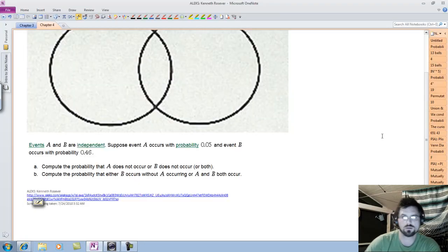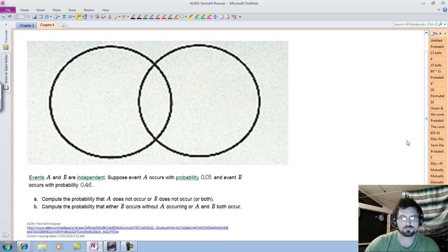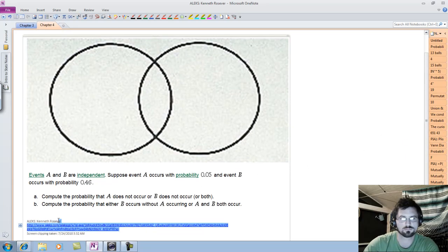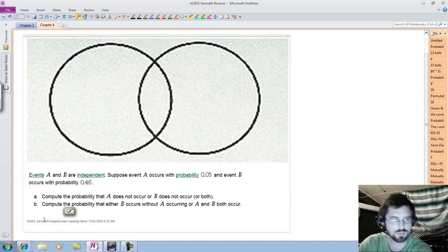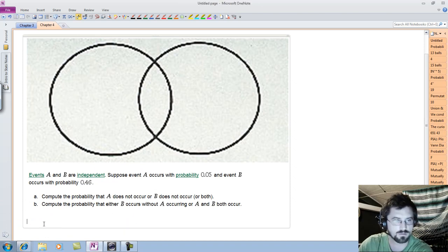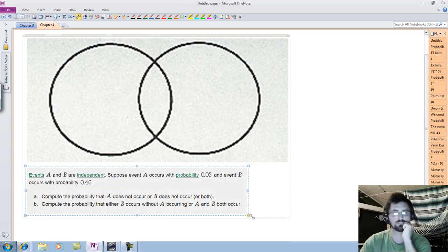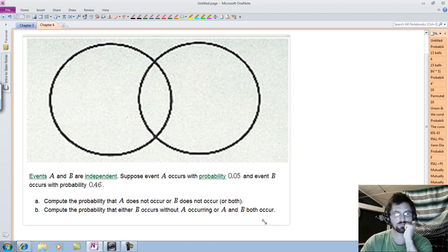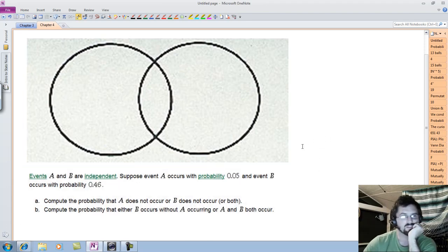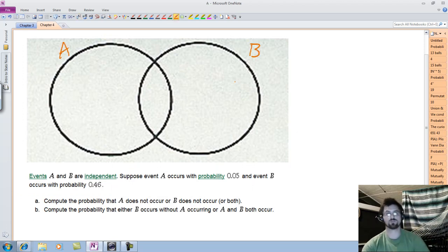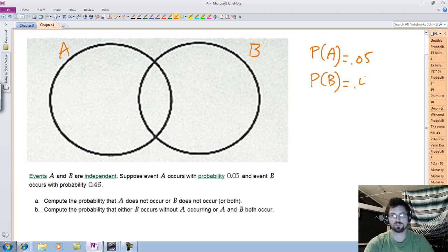And now we'll take a picture of this information. Okay, so let's make that a little bigger. It says A and B are independent, so once again we have A and B, they are independent. And A occurs with a probability of 5%, so P of A is .05. P of B is .46.